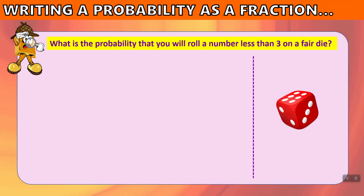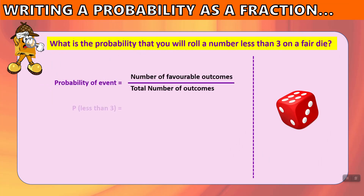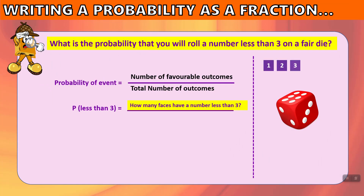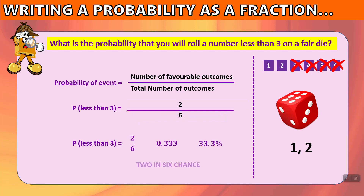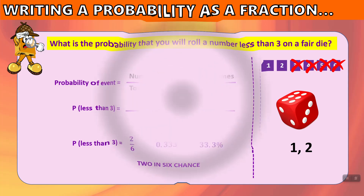What about a number less than 3? How many numbers on the die are less than 3? Writing out 1 through 6, the numbers less than 3 are 1 and 2 — that makes 2 numbers out of a total of 6. The probability is 2 out of 6, or 0.333, or 33.3% — a 2 in 6 chance.